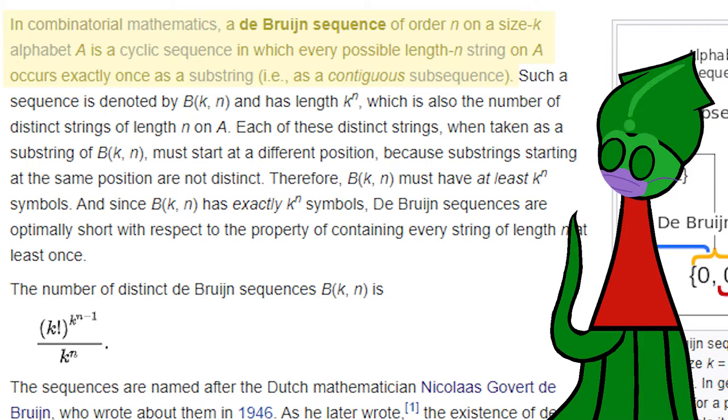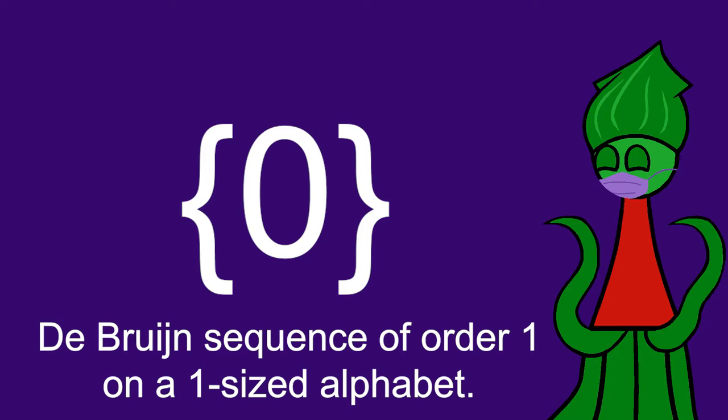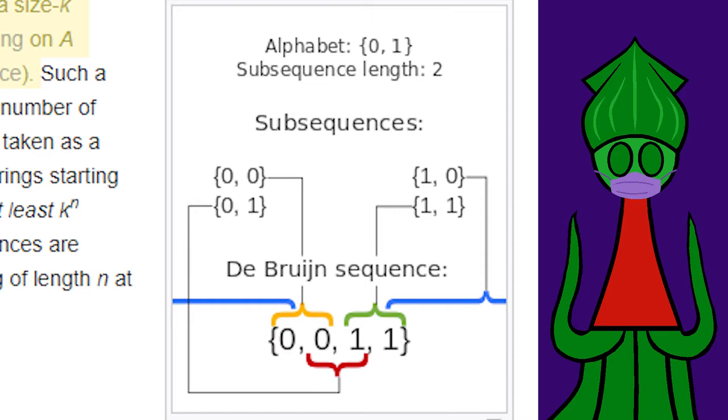Here's a super easy one. Just the number zero. We can call it a Debron sequence of order one on a one-sized alphabet because it contains the number zero precisely once.